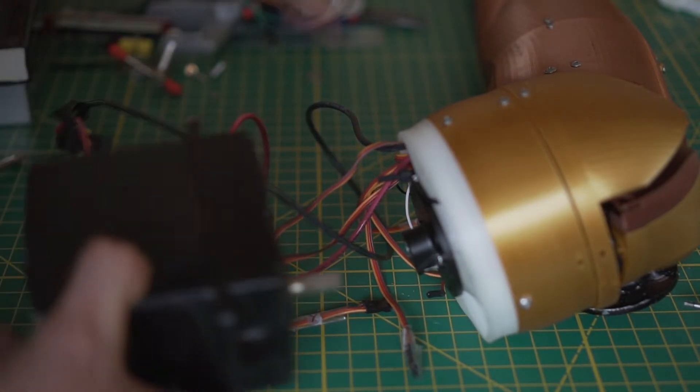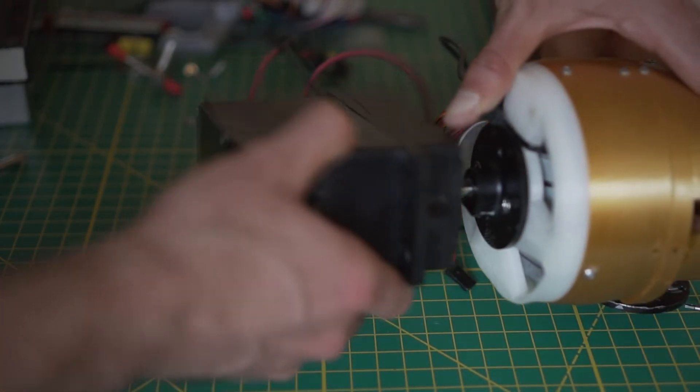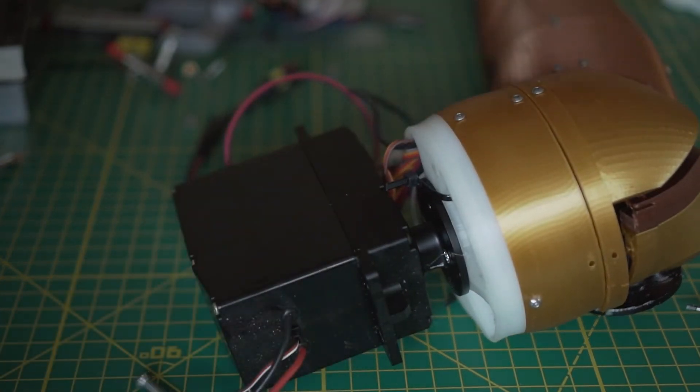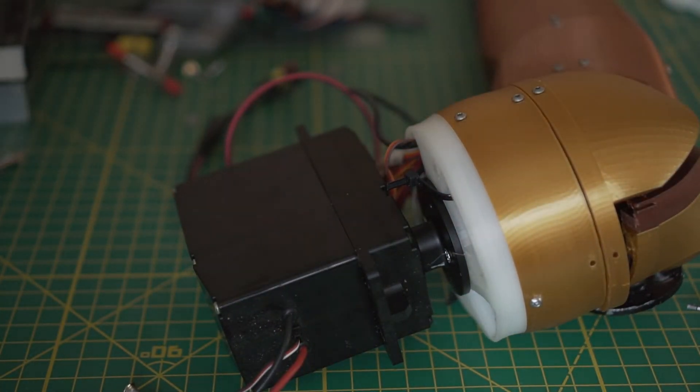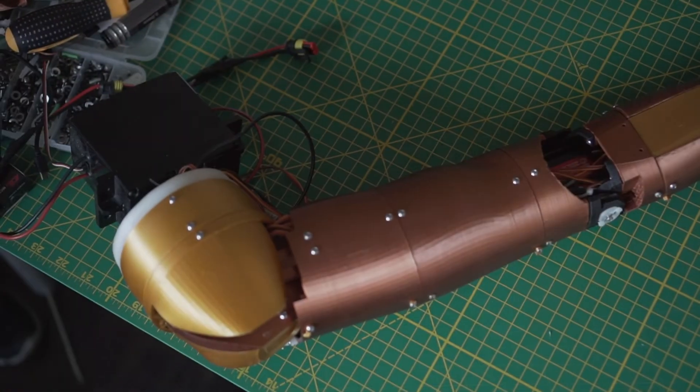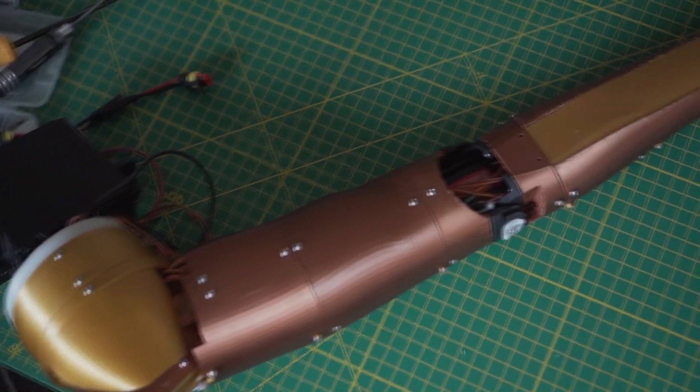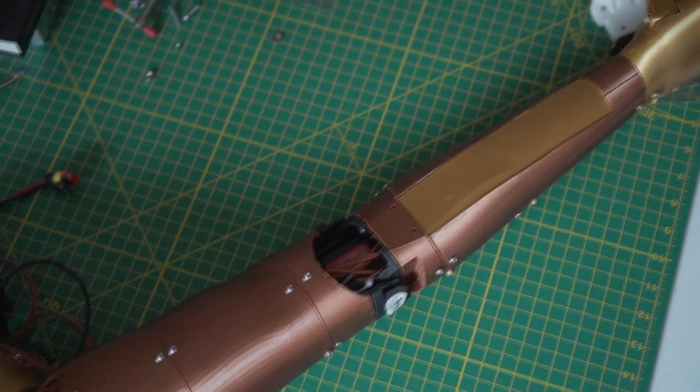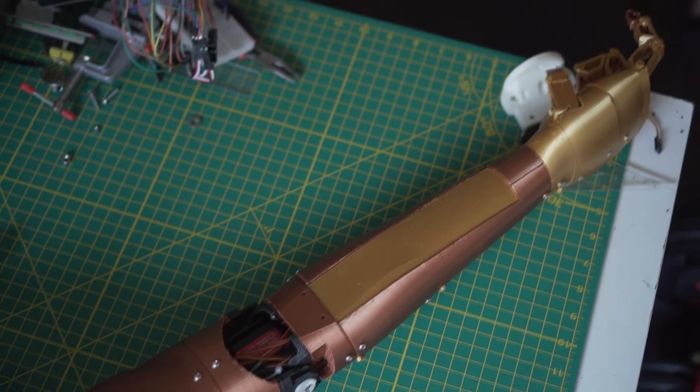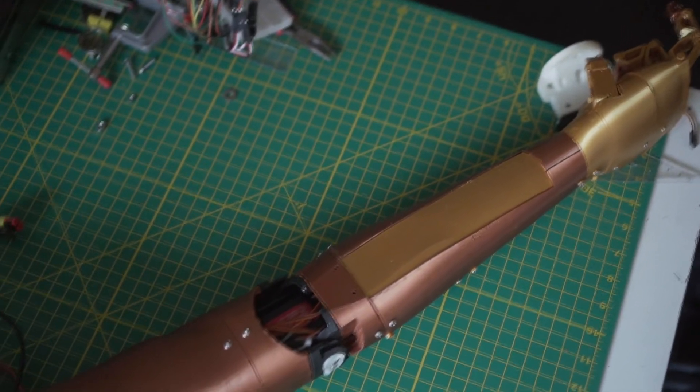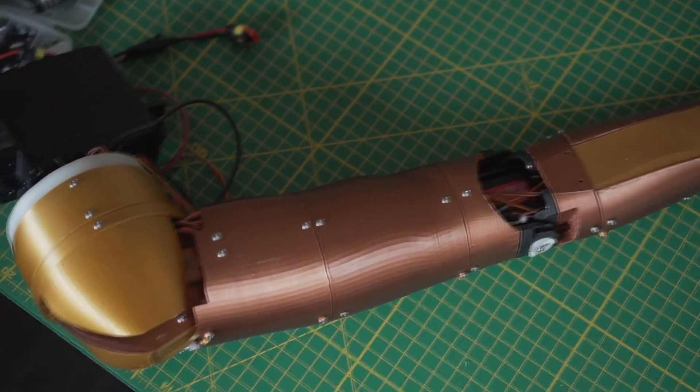It's time to attach the huge servo motor that moves the entire arm. And we are done. This is the entire robotic arm. We have just completed all the process of assembling, and the dimensions are very close to a real human arm.